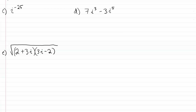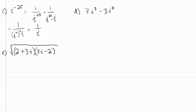In example C, we have i to the negative 25th power. First, we rewrite it with a positive exponent: 1 over i to the 25th. Then I write that as 1 over i to the 24th times i. Since 24 is divisible by 4 (that's 6 times 4), i to the 24th equals i to the 4th raised to the 6th power, which is 1 to the 6th, or just 1. So we end up with 1 over i.